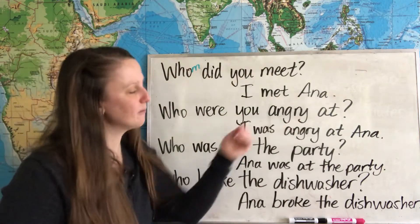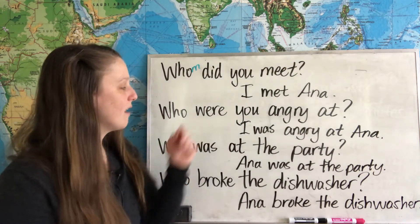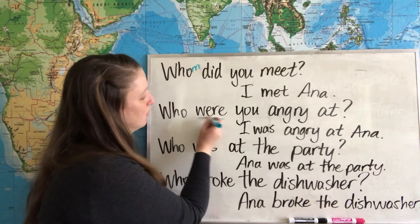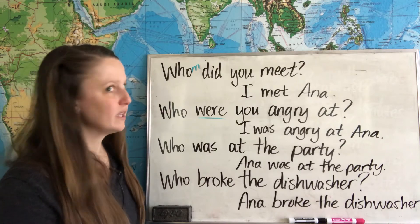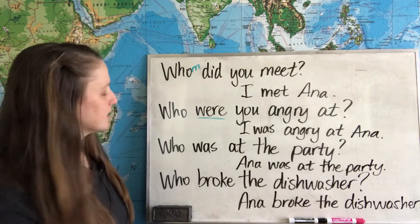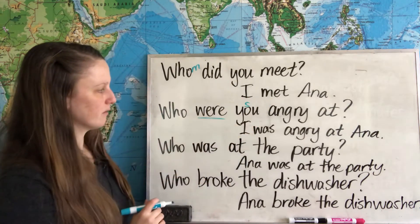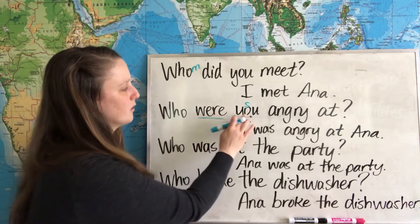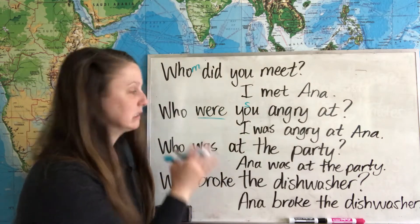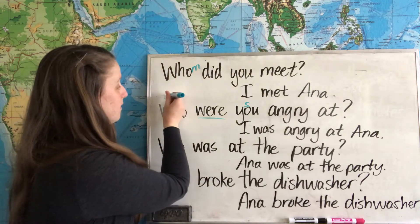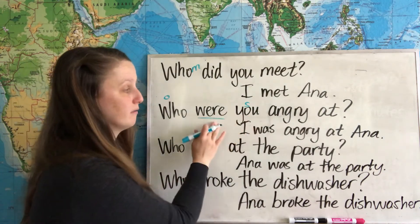Let's get to our next example: Who were you angry at? Let's try the first strategy. We have our verb — the be verb, were — and we need to find the subject for that verb. The subject is you. So we have subject and verb: were you. Because we already have a subject for the main verb, we know that who must be the object again.